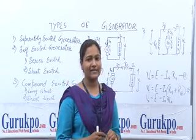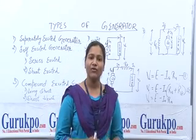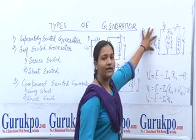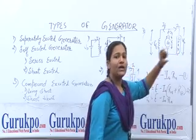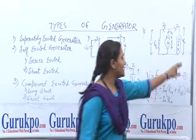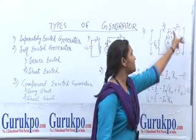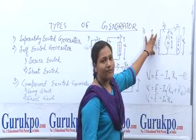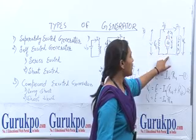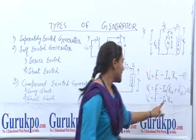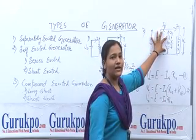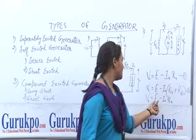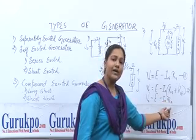For the shunt self-excited generator, the field excited coil is connected in shunt — that is, in parallel — with the armature generator coil and the load. Here in the diagram, the field excited coil is connected in parallel with the generator and the load. In parallel, the voltage drop is the same, meaning the voltage across the load terminals equals the voltage across the field winding RF, so VRF = VL. The terminal voltage is calculated by applying the KVL equation: VL = E − IA·RA, where IA·RA is the voltage drop due to the internal resistance of the armature.